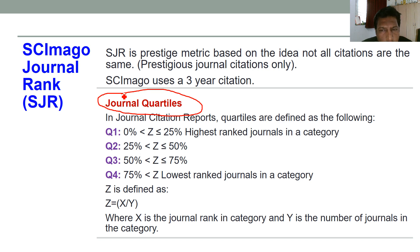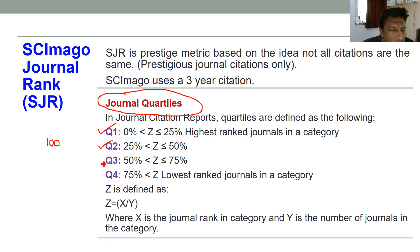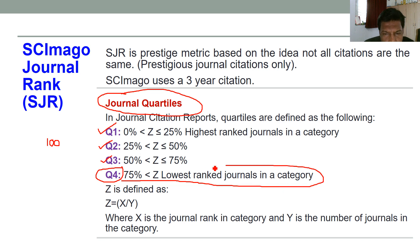In the journal citation report, quartiles are defined as follows: suppose in any domain — for example, material science — there are 100 journals available. The top 25 percent, that is the top 25 journals, are called Q1 category. Then ranks 26 to 50 are called Q2 category. Ranks 51 to 75 are called Q3 category. And the bottom 25 journals are called Q4 category, meaning those are the lowest-ranking journals in that field.